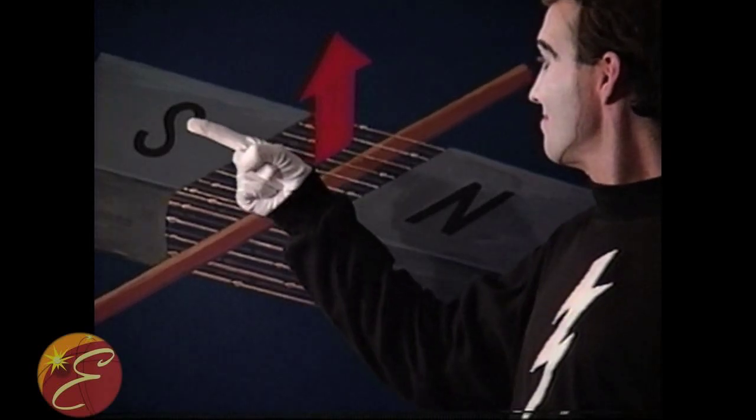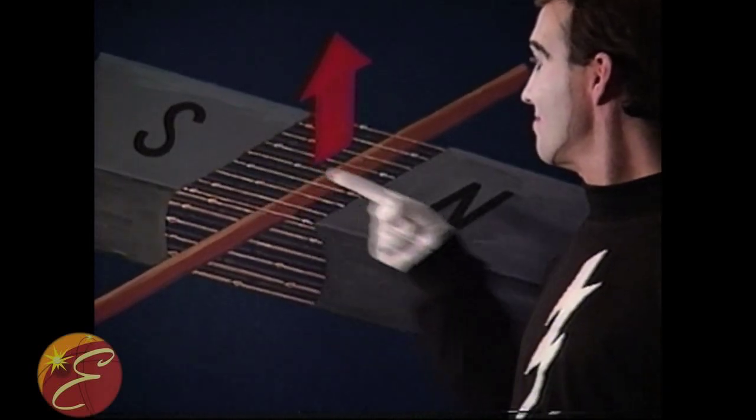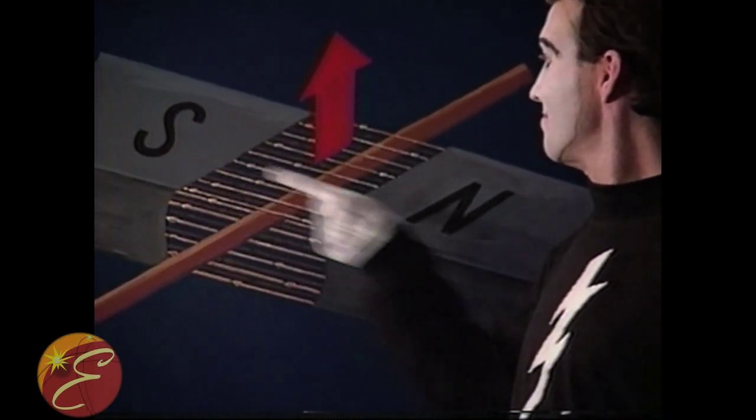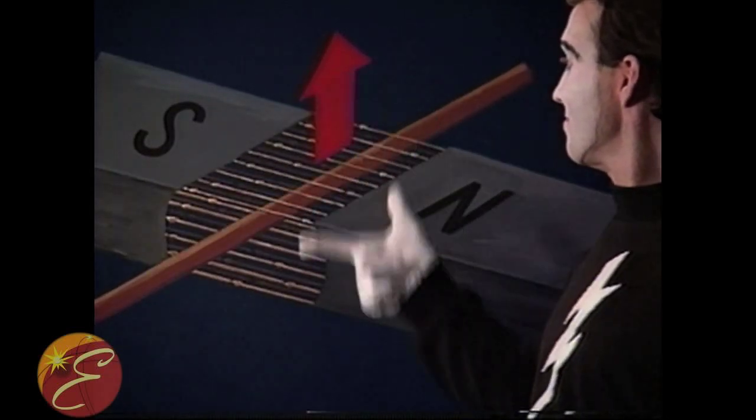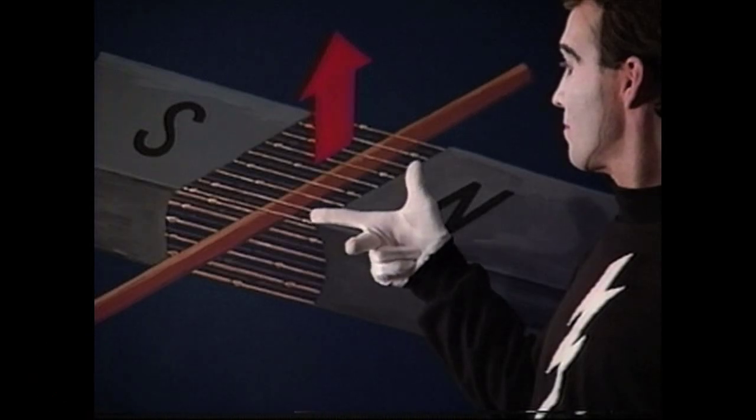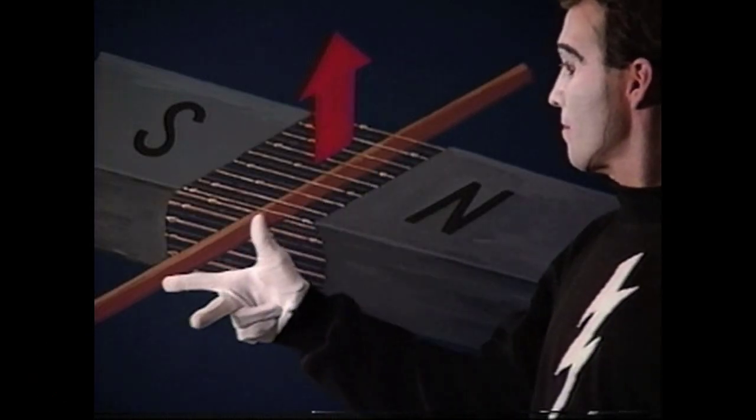Point the forefinger in the direction of the magnetic field from the north to the south pole, and your thumb in the direction of the conductor's motion. Then your center finger points in the direction of the induced electric current.